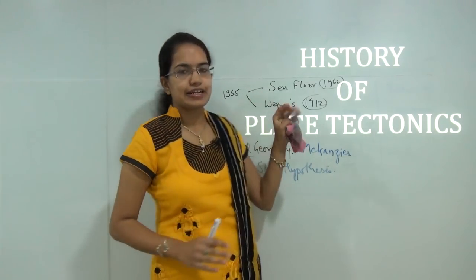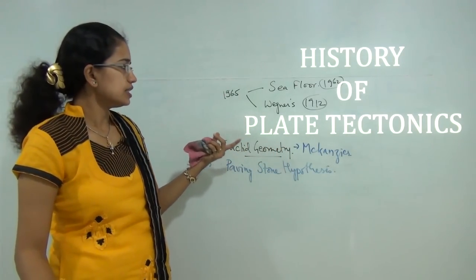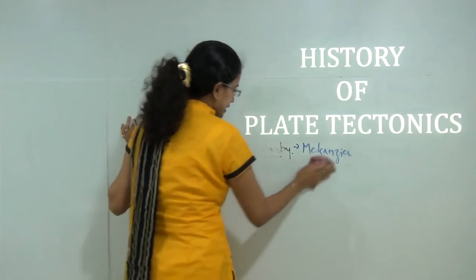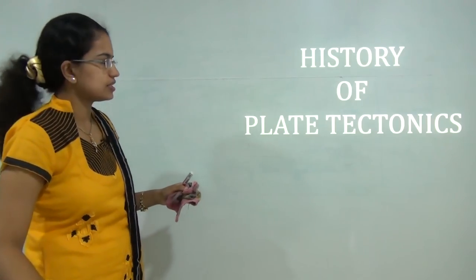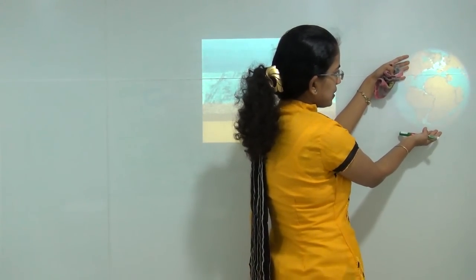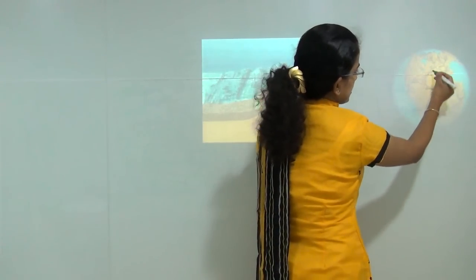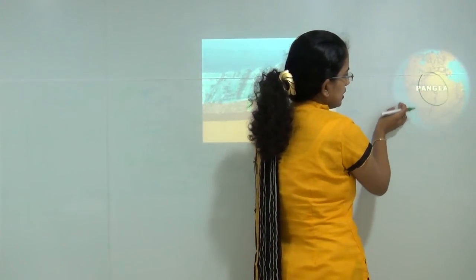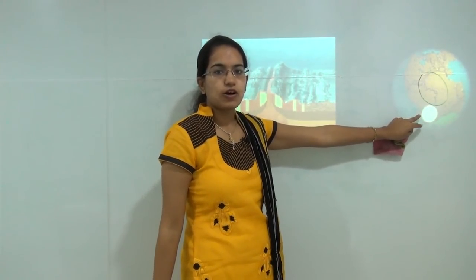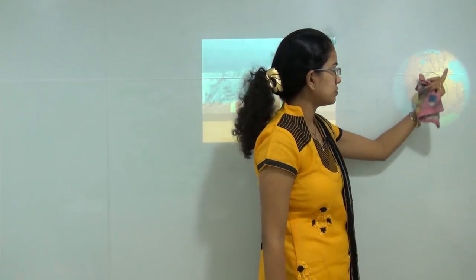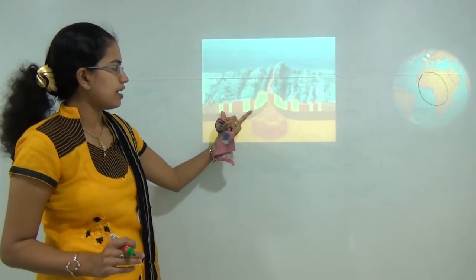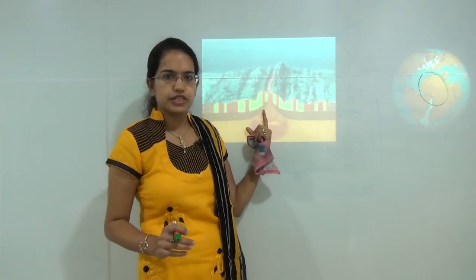This is how the concept of plate tectonics evolved. Now, just a recap of the two concepts — Wegener's theory and seafloor spreading — to better understand plate tectonics. Here you have the present day world map and as we move back into history you can see a single continent known as Pangaea, with the remaining ocean body known as Panthalassa. This is how Wegener tried to explain the continental drift theory — that in previous times there was a single continent which slowly and gradually drifted apart.